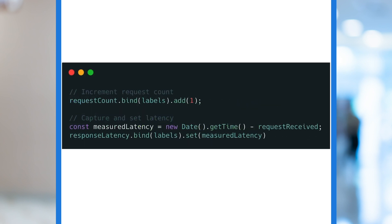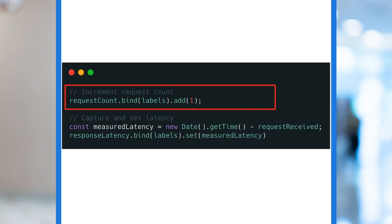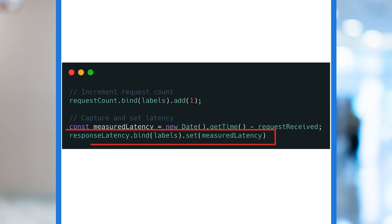Finally, we're ready to add values to our metrics. For our monotonic counters, we can use the add method to increment them every time we get a request or throw an error. For the non-monotonic gauge, we can use the set method to explicitly set the value of the metric.